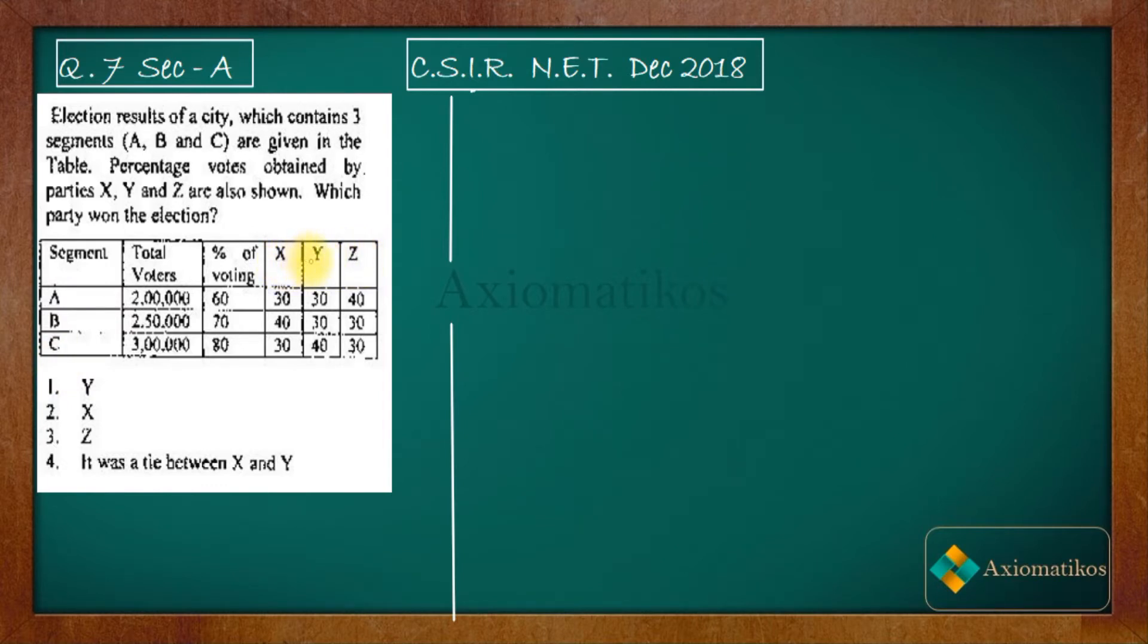And then the party which has the maximum number of votes will win the election. So now see, we have to find out total votes for party X. Then we have to find out total votes for party Y and then similarly for Z.